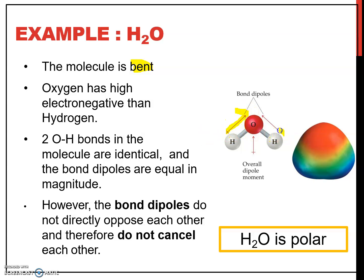On the other side as well, oxygen attracts the electrons more towards oxygen compared to hydrogen. These two hydrogen-oxygen bonds are identical. But the shape is unsymmetrical, and the dipole moments both go upward towards oxygen, so they are not directly opposed to each other.